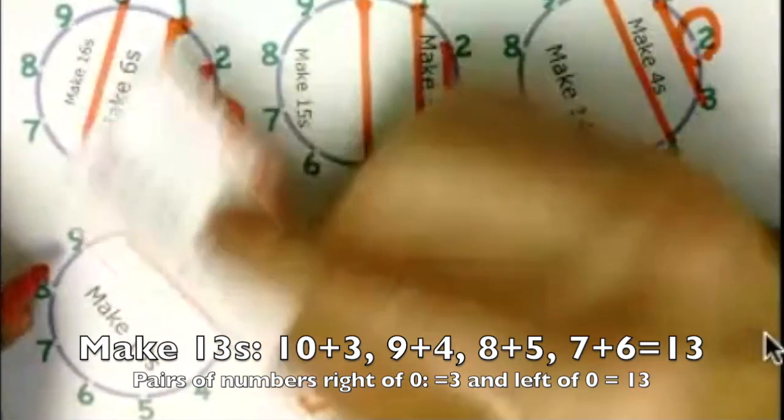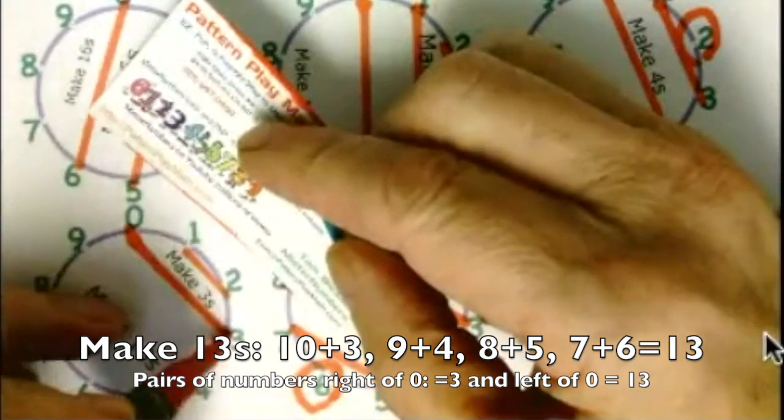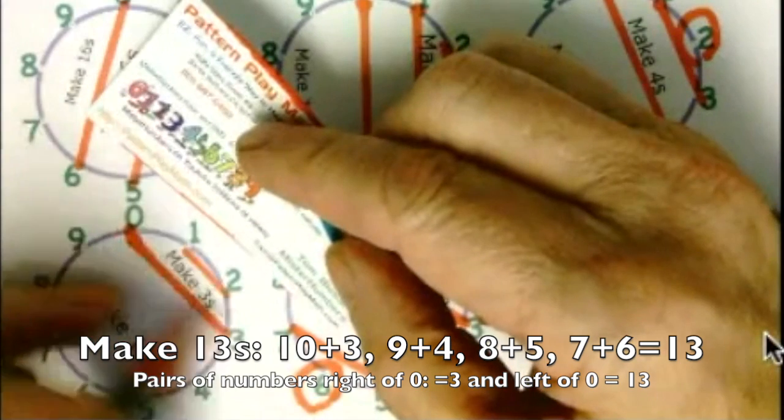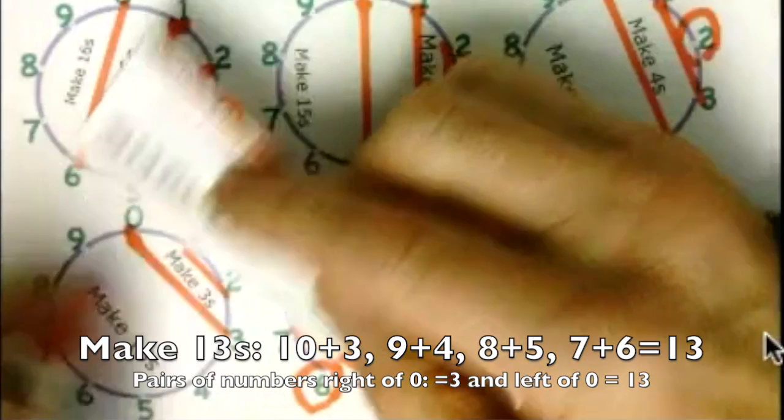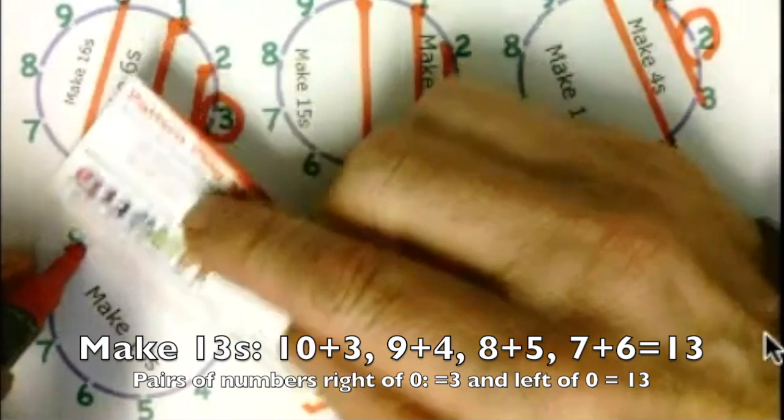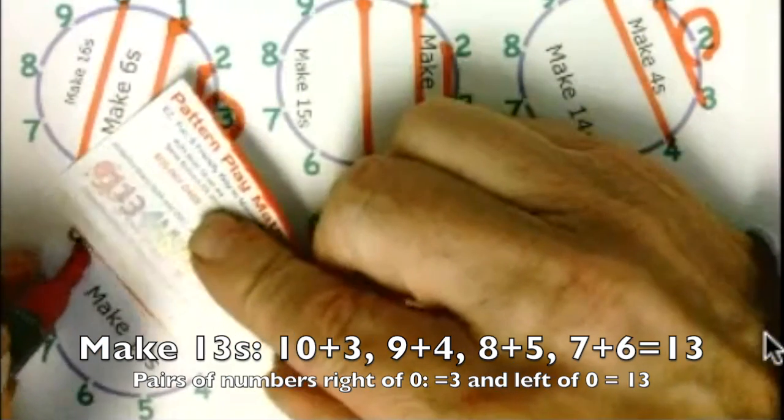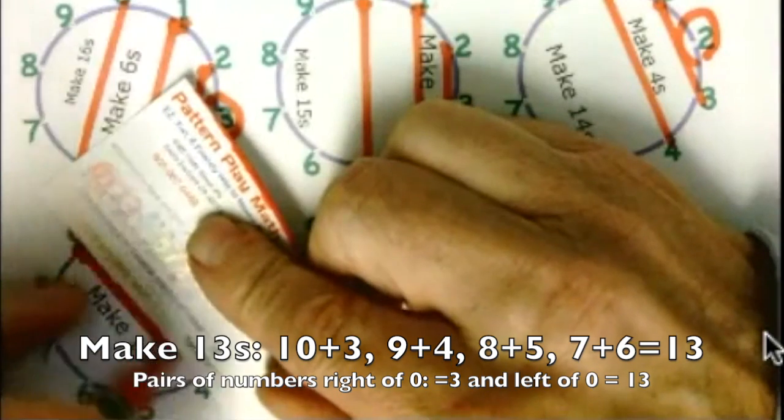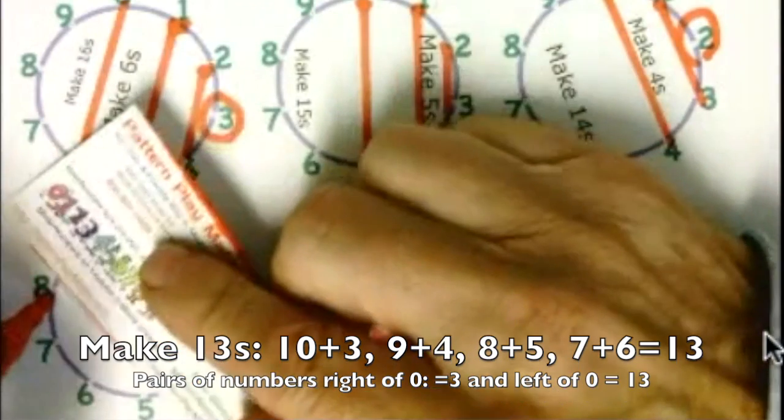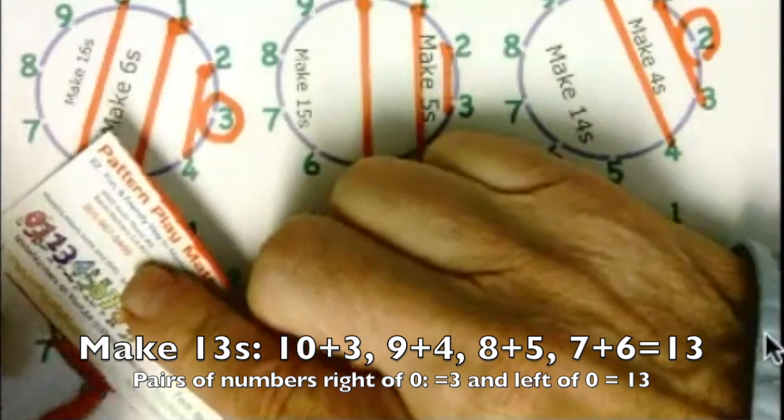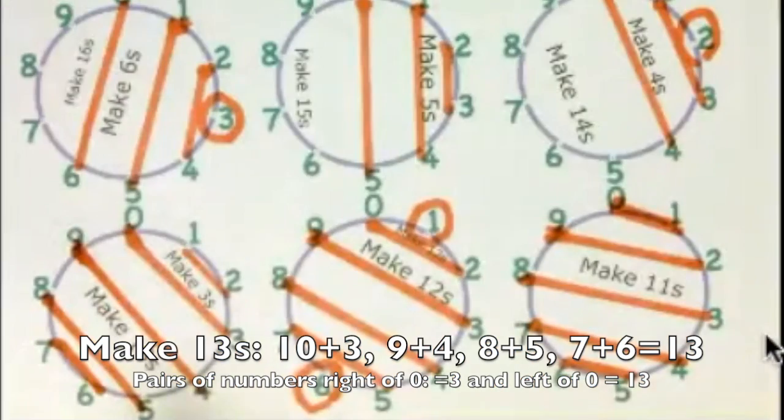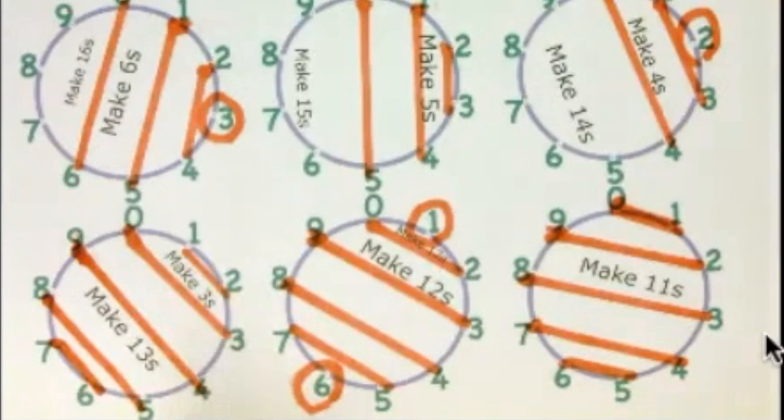So then we've got 13s. And we have 10 plus 3 is 13 already there. It's 0 plus 3 is 3, and 10 plus 3 is 13. It works on the left and the right of the 0. And 9 and 4 make 13, and 8 and 5 make 13, and 7 and 6 make 13. Can you see how easy it is for kids to look at this and start seeing the whole set of numbers?